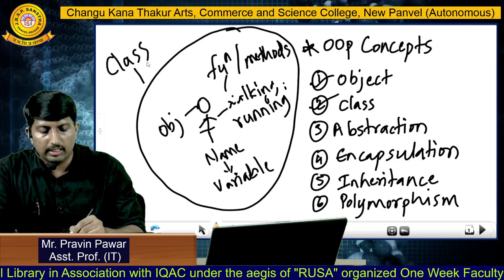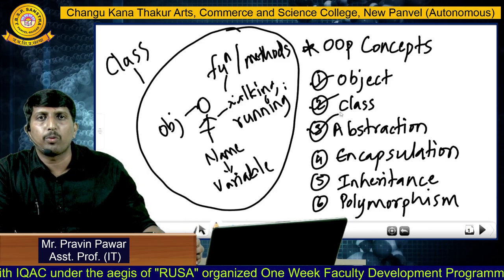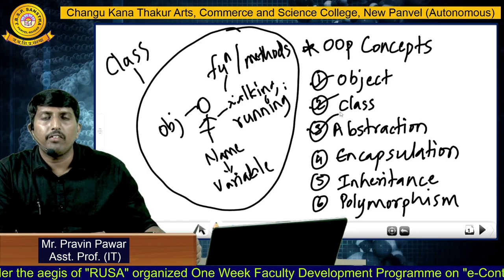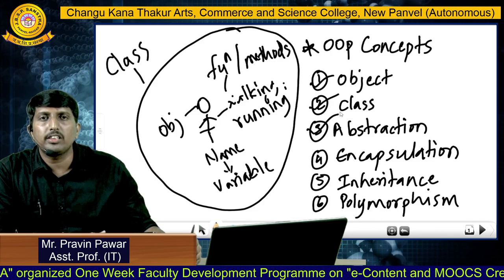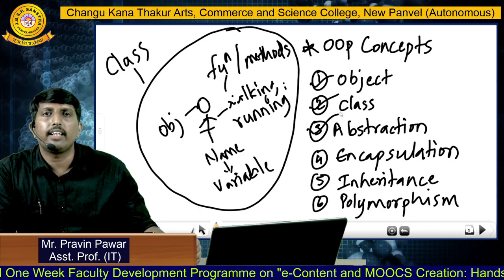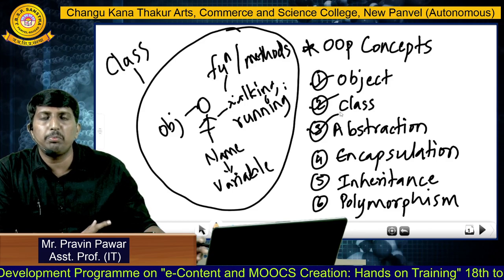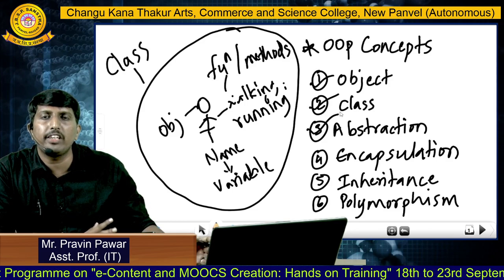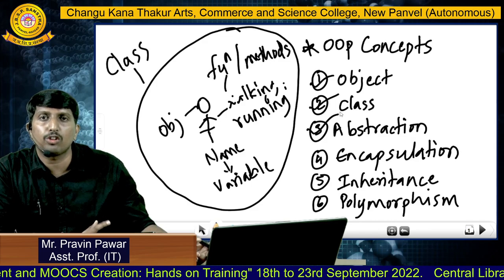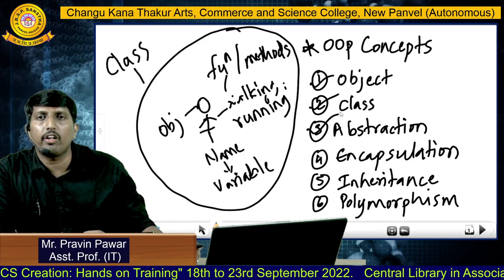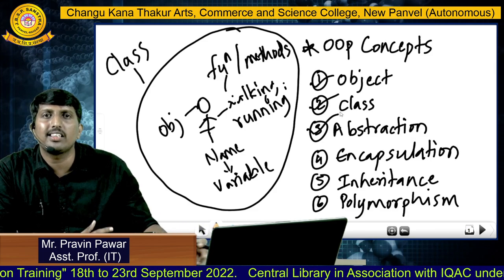The third concept of object-oriented programming is abstraction. In abstraction, whatever things we are hiding that are not visible to any person is called abstraction. For a real-world example, consider on-off switches on a switchboard. When we press the button the light turns on; when we press again it turns off. That visible part is all we see — what is happening behind the button is not known to us.